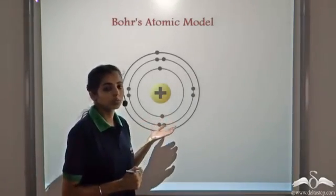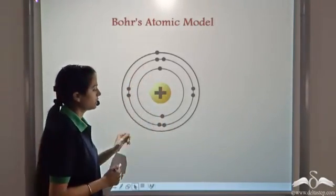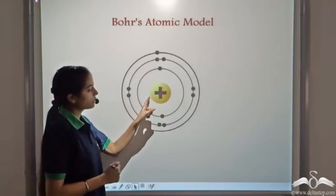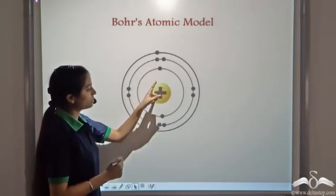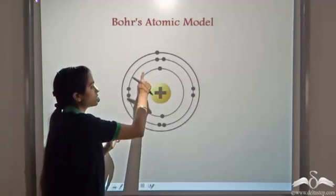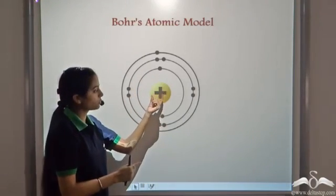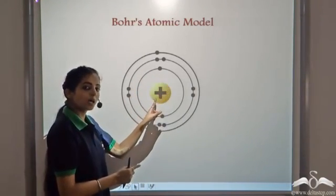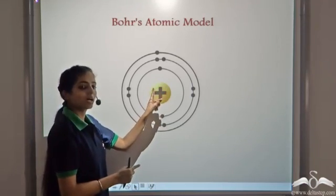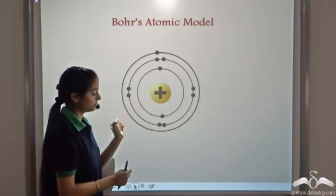Bohr had given his atomic model, according to which the entire mass of the atom was concentrated in the nucleus, because the mass of electrons is negligible as compared to the mass of protons. So the entire mass of the atom is present in the nucleus, as the protons are present in the nucleus of the atom.